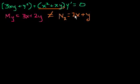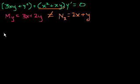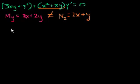What if there were some factor — some function — that we could multiply both sides of this equation by that would make it exact? Let's call that mu. Mu could be a function of x and y, just x, or just y. If we assume it's a function of x and y, it becomes a lot harder to solve for. So let's assume mu is a function of x only.